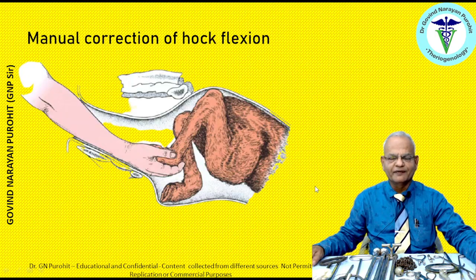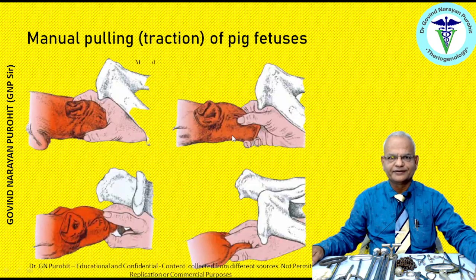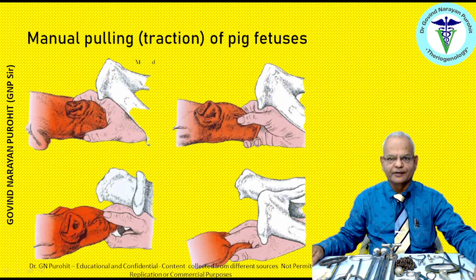Manual correction of hock flexion: if there is bilateral hock flexion, you can straighten the hocks to deliver the fetus. In all these pictures you can see it's your hand — manual pulling of a cat fetus by grasping it between your fingers, and manual pulling of a pig fetus by grasping the snout, the face, or the hind legs between your hands and pulling it out.